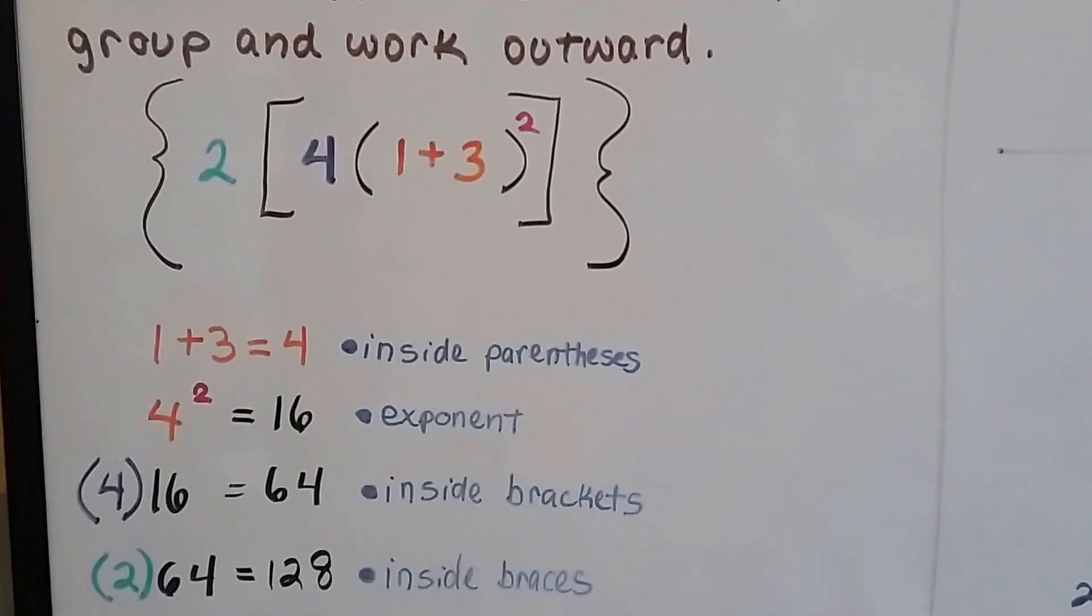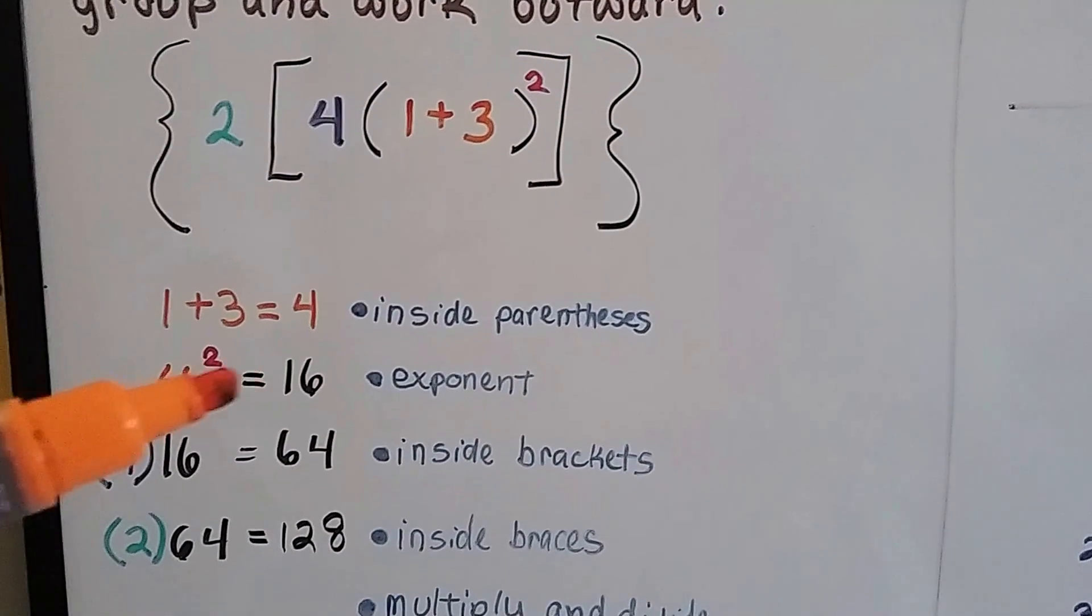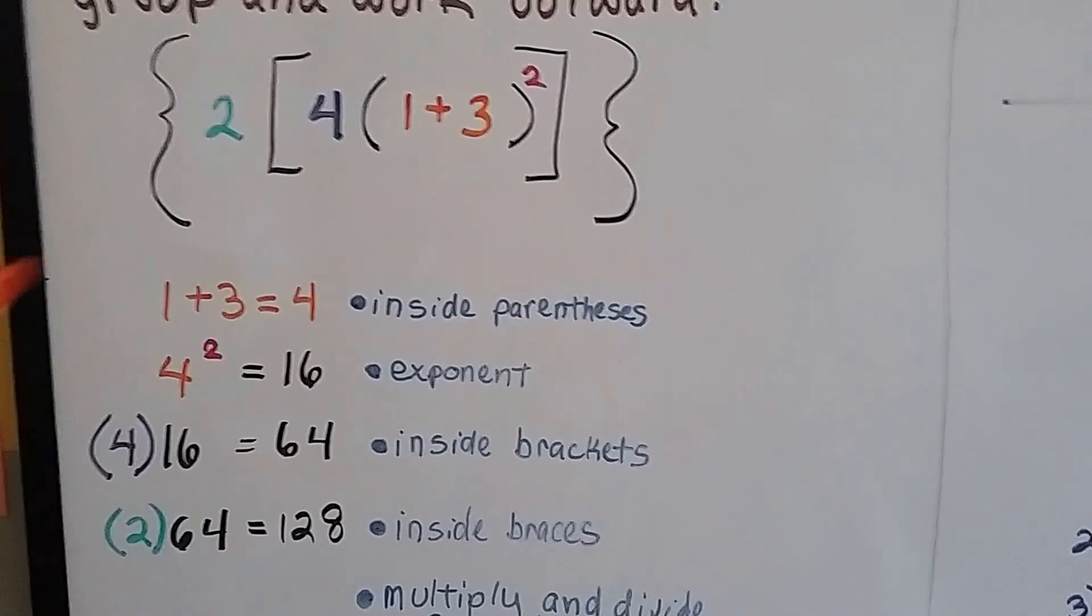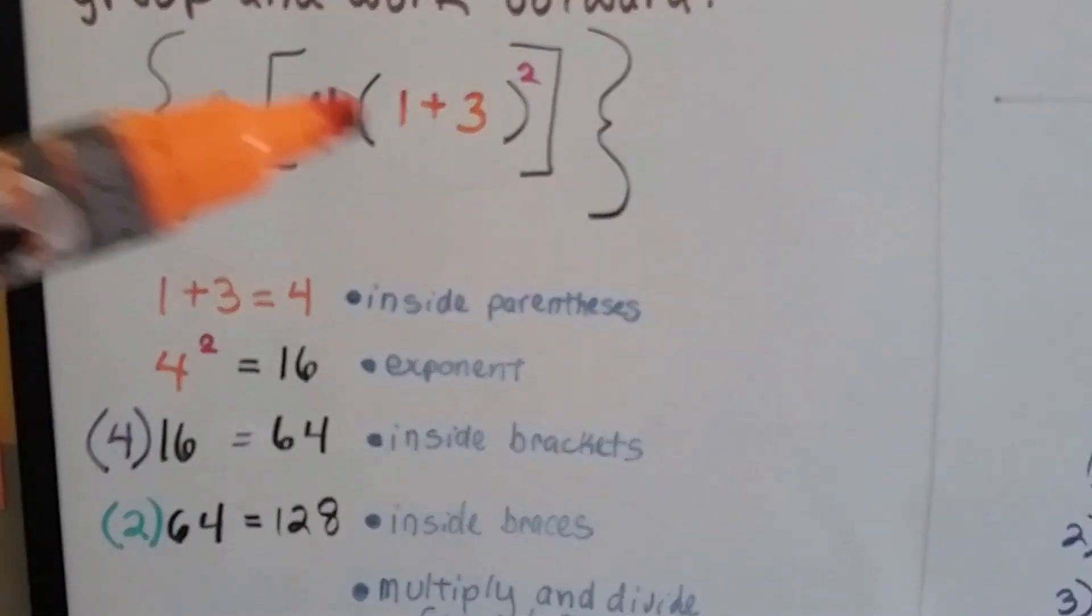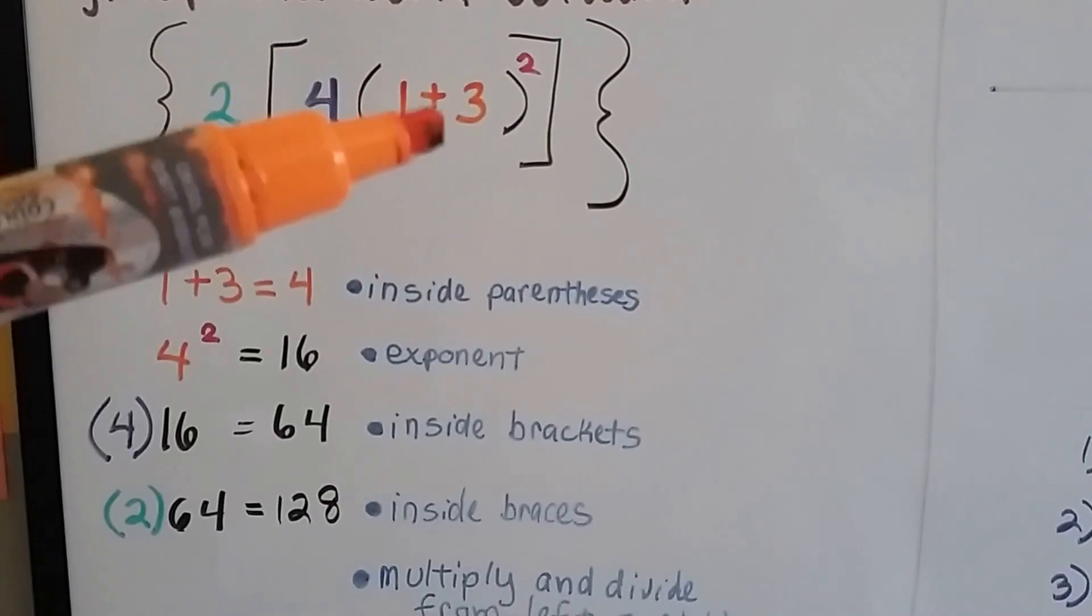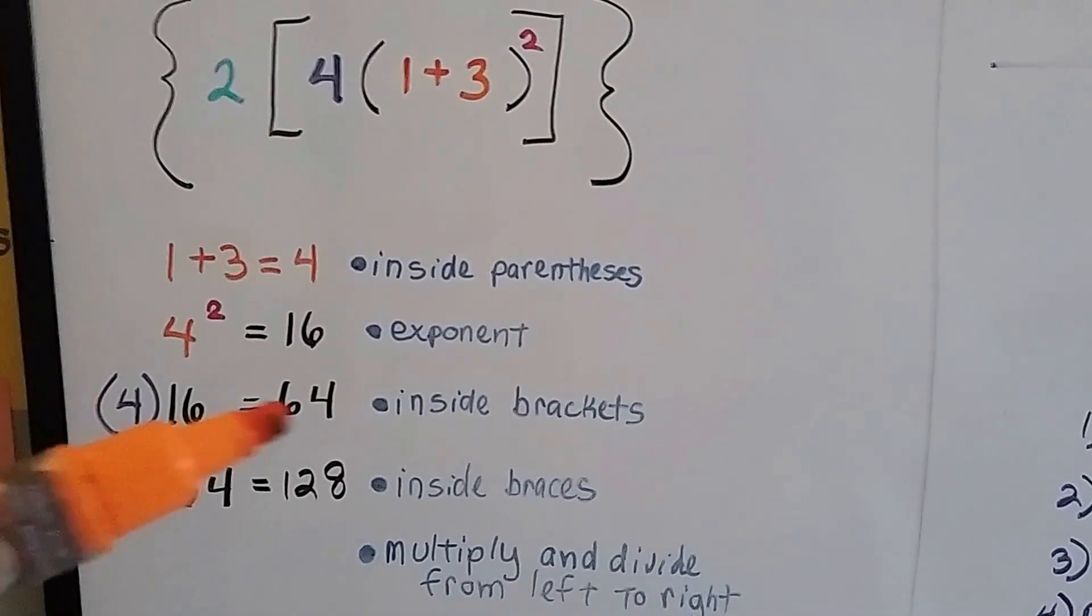Now, because it has this little 2 exponent, we're going to do that next. So 4 to the second power is 16. Now we're going to multiply it by this 4 because it's inside of these brackets. We're slowly working our way out from the parentheses. Now we're to inside the brackets. 4 times 16 is 64.